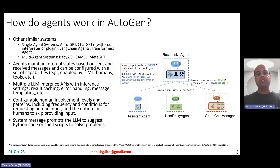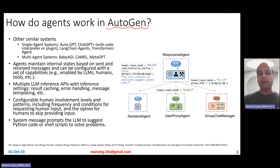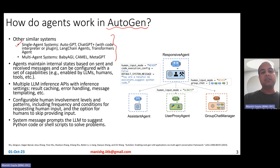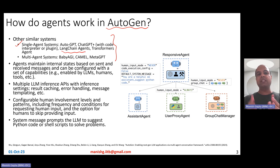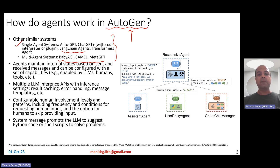Now let's look at details of how Autogen works — how agents work and how conversations and conversation patterns work. Autogen is not the only package in this kind of work; there are other similar systems for single-agent and multi-agent setups. Single agent systems include AutoGPT, ChatGPT Plus with code interpreter or plugin, and Langchain agents and Transformers agents. Autogen is a multi-agent system, comparable with BabyAGI, Camel, and MetaGPT.